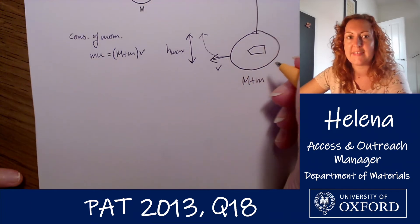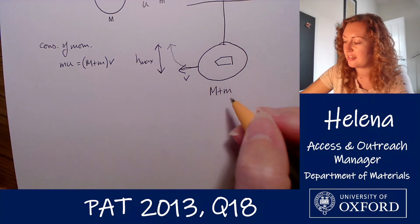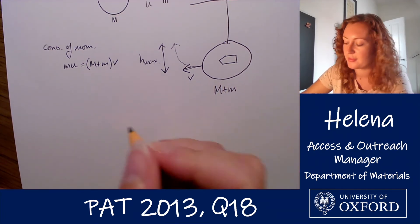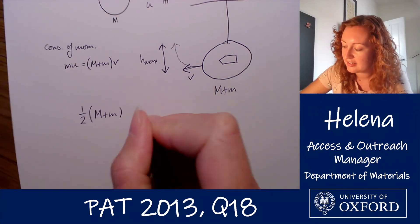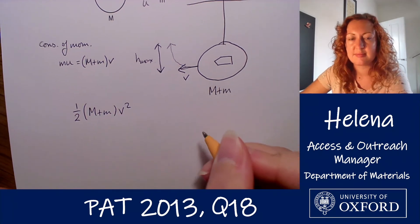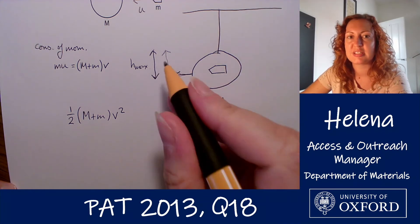Okay, so let's write that mathematically. It's kinetic energy following the collision: half mv squared, so it's a half times the sum of the masses here times v squared.